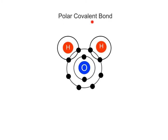Polar covalent bonds form when two or more atoms share electrons unequally. One atom attracts the shared electrons more strongly than the other atoms. Polar covalent bonds always occur between different atoms. A common example of a molecule containing polar covalent bonds is water, H₂O. As a result of a polar covalent bond, the resulting molecule ends up having a partial negative charge near the atom with a stronger attraction for electrons, and the other atom or atoms in the molecule will have a partial positive charge.